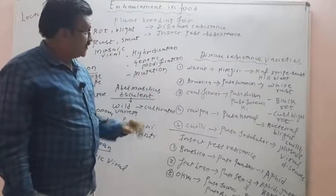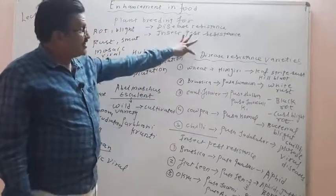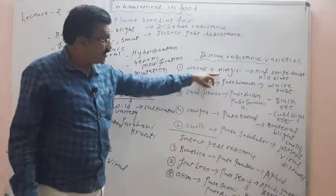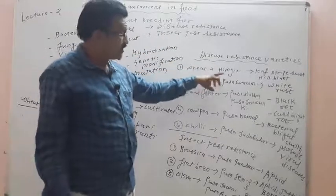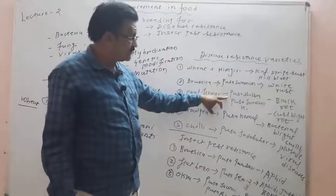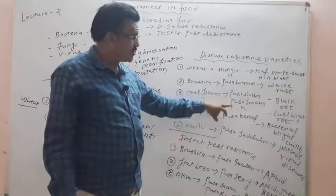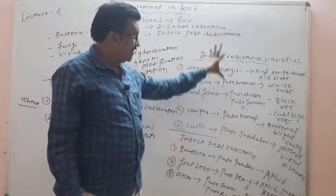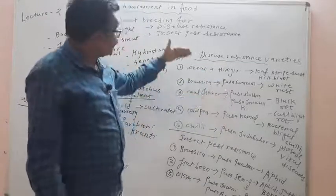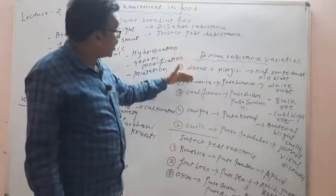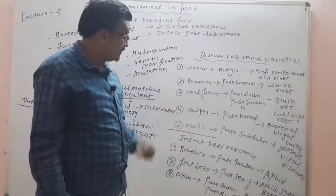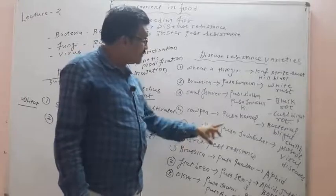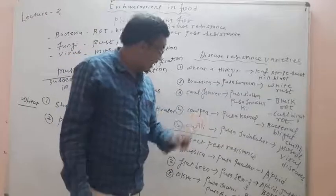The disease resistance varieties are: Himgiri wheat, Pusa Swarnim Brassica, Pusa Shubra cauliflower, Pusa Snowball K1 cauliflower, and Pusa Komal cowpea. Additionally, the chilli variety Pusa Sada Bahar is also a disease-resistant variety.